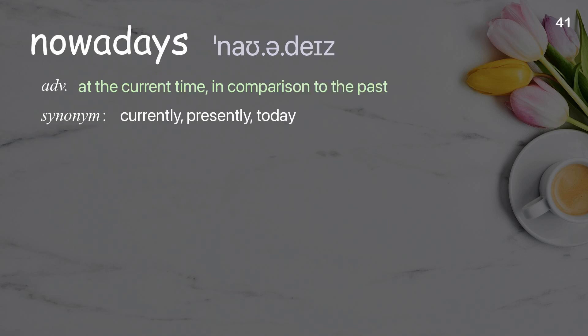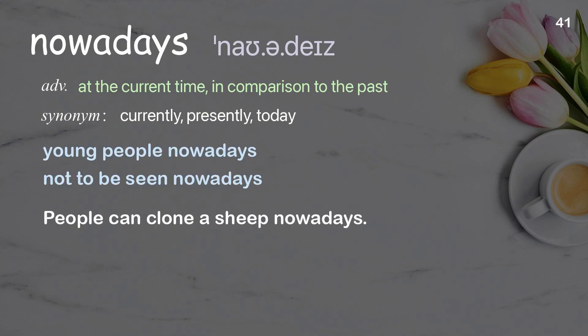Nowadays: at the current time, in comparison to the past. Examples: young people nowadays, not to be seen nowadays. People can clone a sheep nowadays.